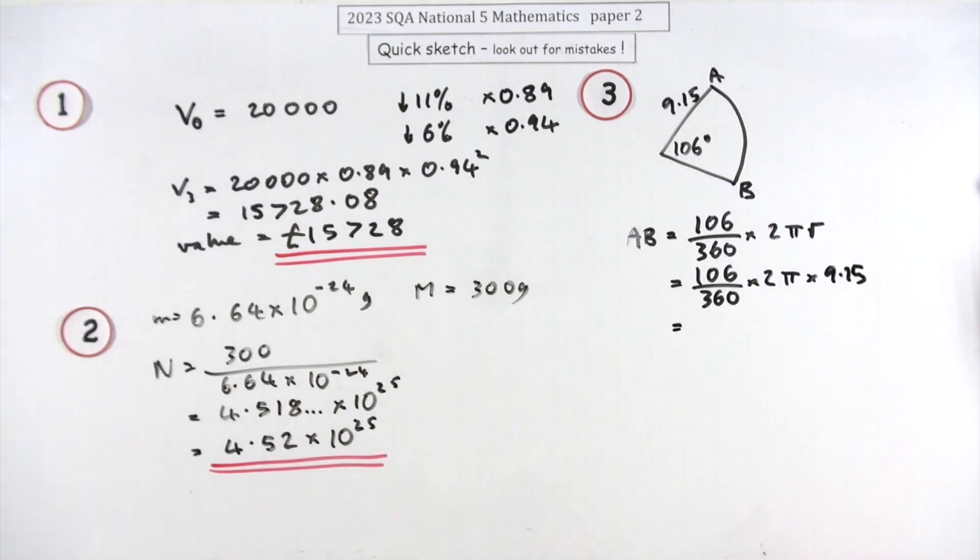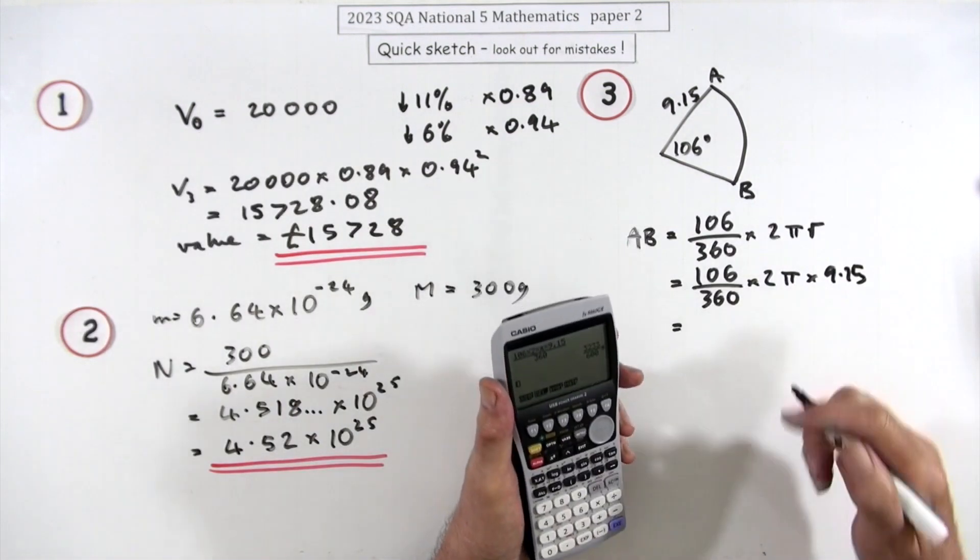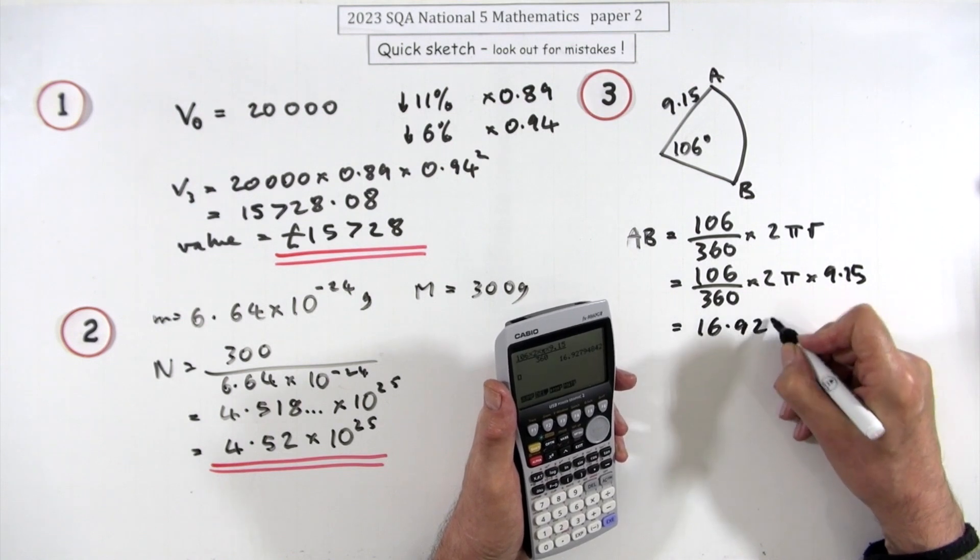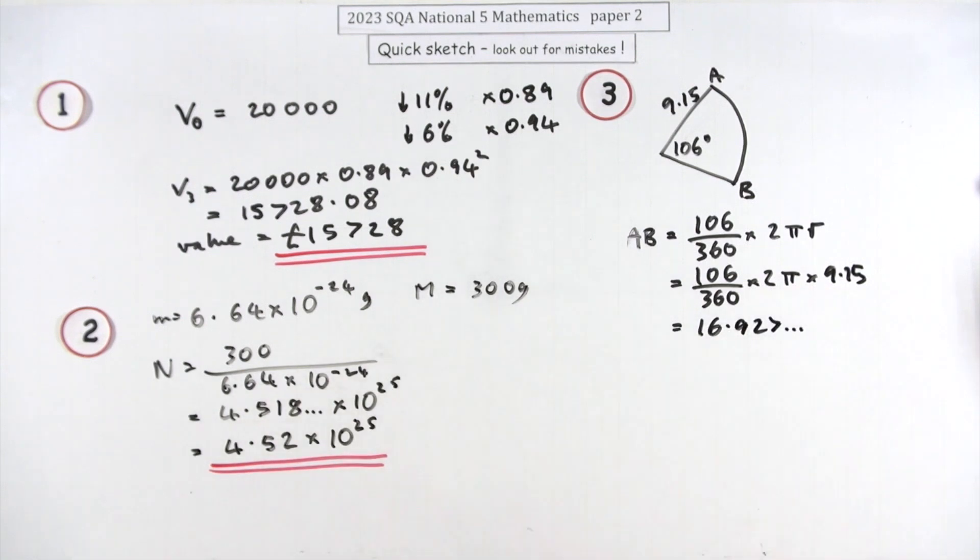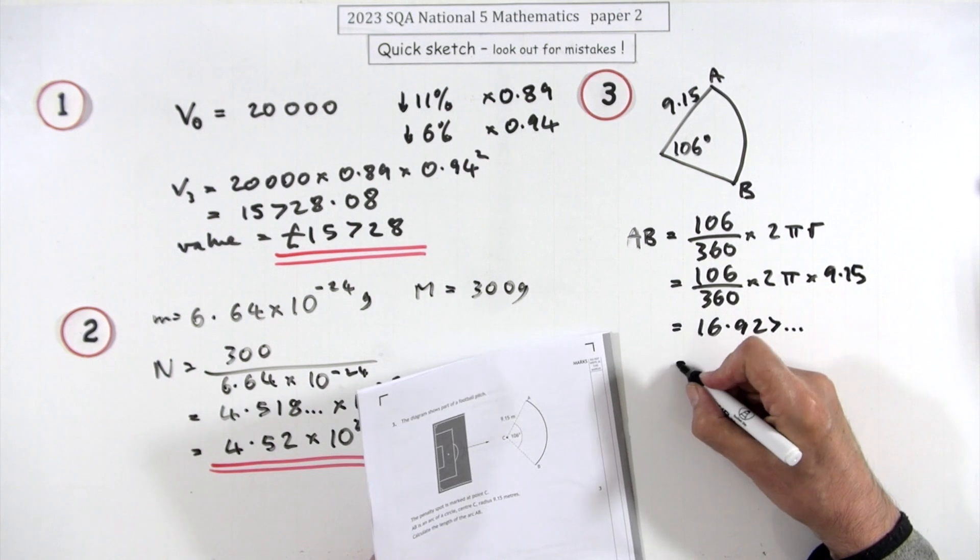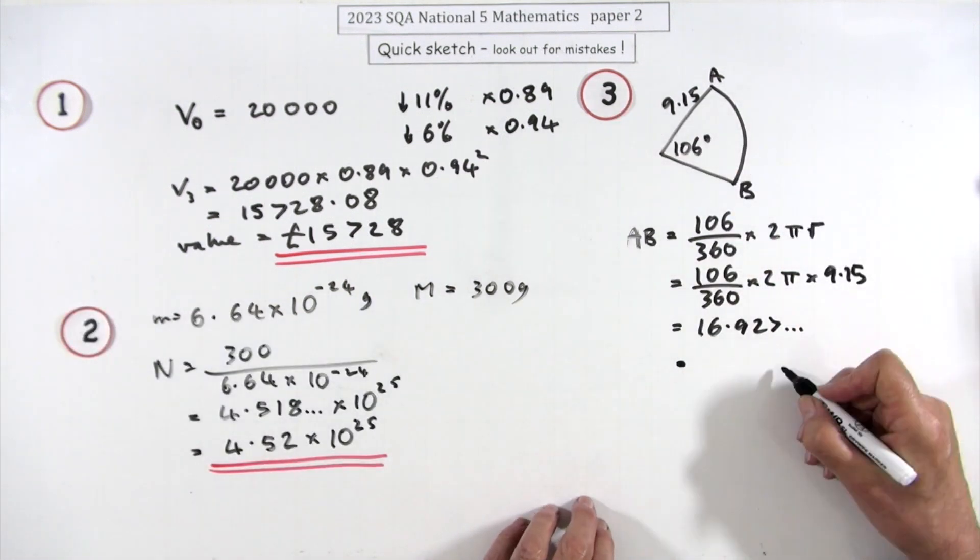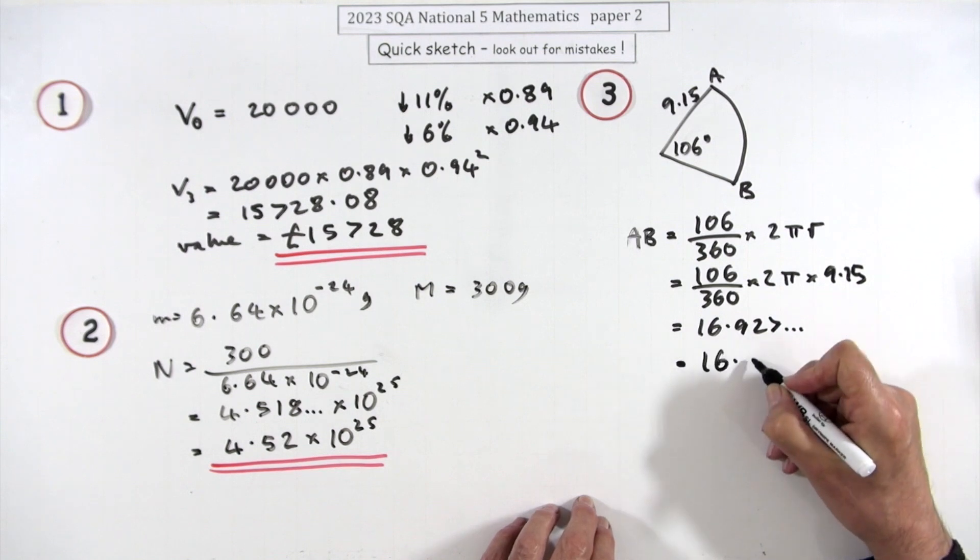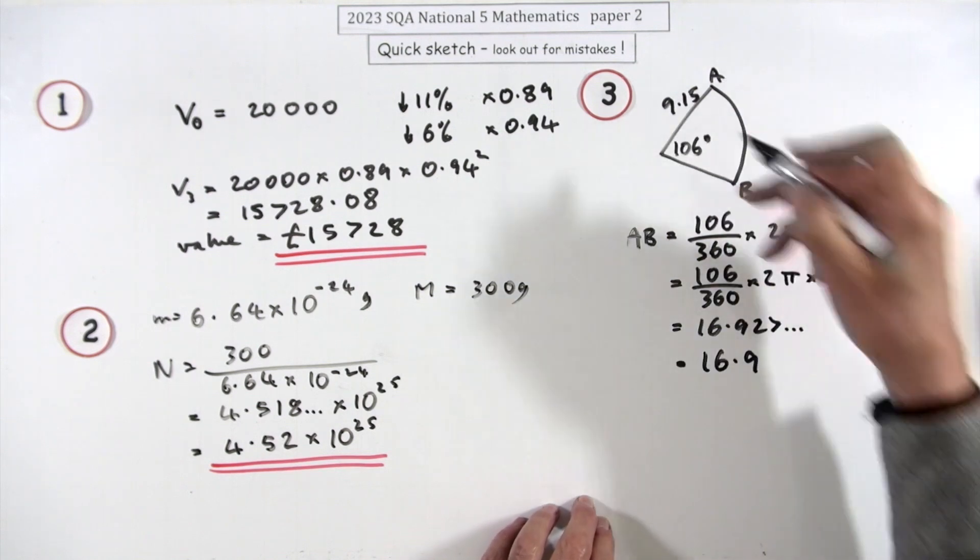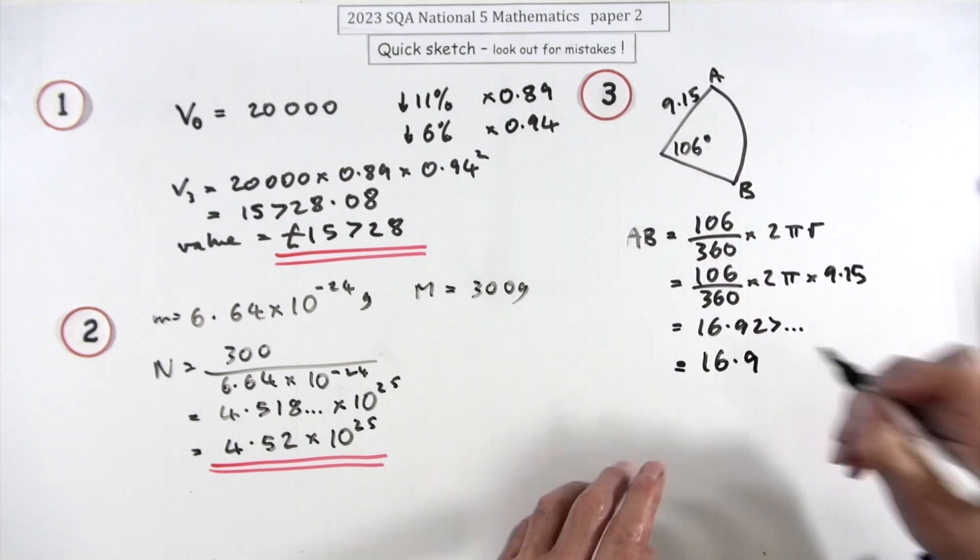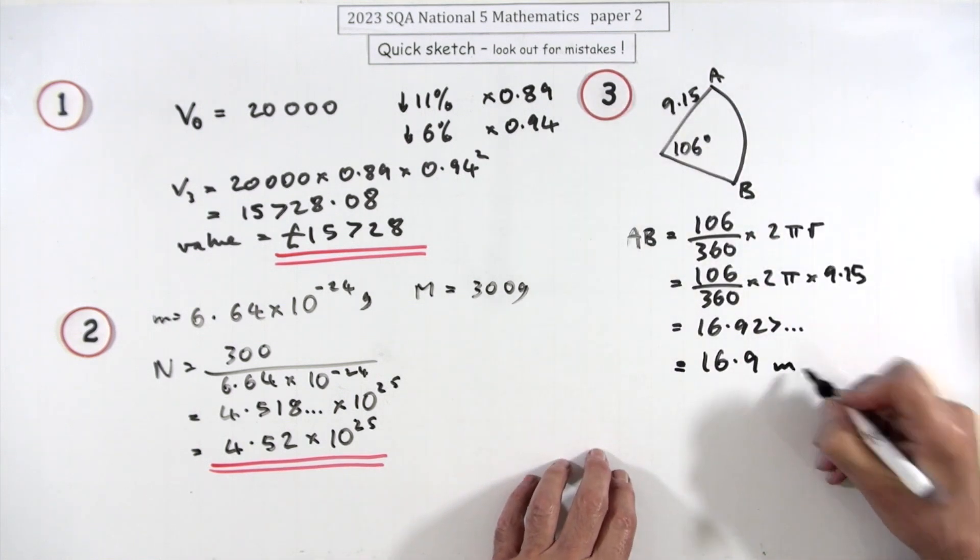Then you press the buttons and there you go. That gives you, take the decimal, 16.927 and so on. So you could either, that's got three figures in it, you can either just go for three figures, 16.9, or assume that that's completely accurate. You could go for the same as that, two decimal places. I think I'll just stick with 16.9 here meters.